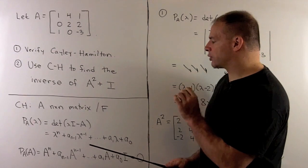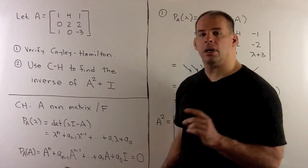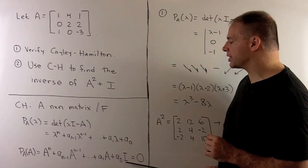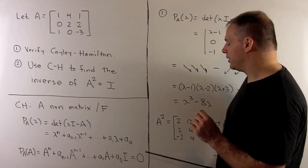If we form the matrix polynomial by replacing lambda with A, multiplying the constant term by the identity matrix, then this expression is equal to the zero matrix.